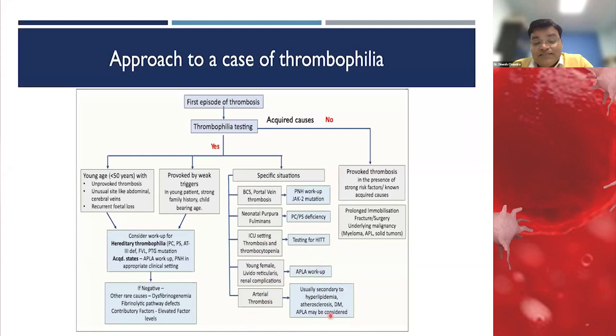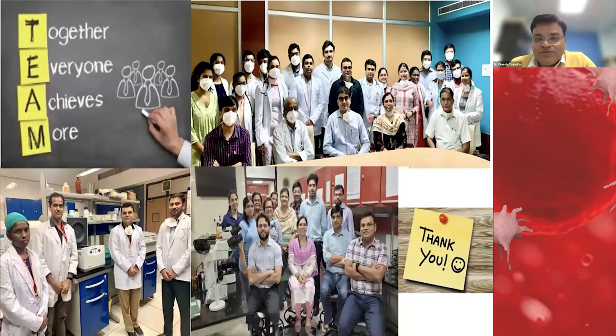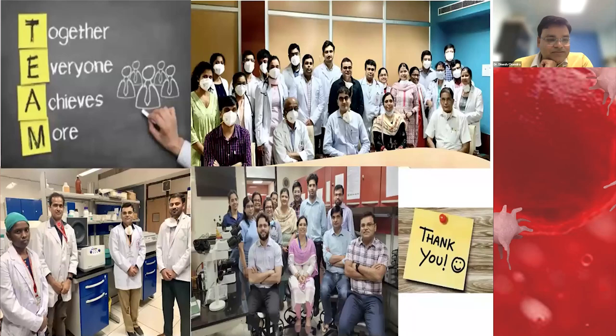Thank you very much for your patience. We can now have some questions and answers if there are any. A question was asked about sending samples for non-PCR thrombophilia workup to an outsource lab. For functional assays of proteins like protein C, protein S, or antithrombin, first rule out pre-analytical variables — ensure the patient is not on anticoagulant and is not in the acute phase, as these cause false negative or false positive results. If these conditions are not present, collect the sample in a citrate tube, prepare platelet-poor plasma, aliquot it, freeze it, and send it to the reference lab in dry ice.